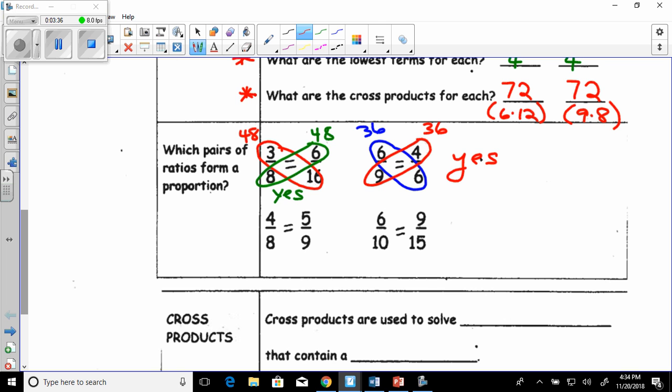Look down at the bottom. 4 times 9 is 36. What is 5 times 8? That's 40. So are they proportional? No, they are not proportional. And the next one. So let's look at the next one. If we did 9 times 10, that would equal 90. And what is 6 times 15? That also equals 90. So yes, they are proportional.